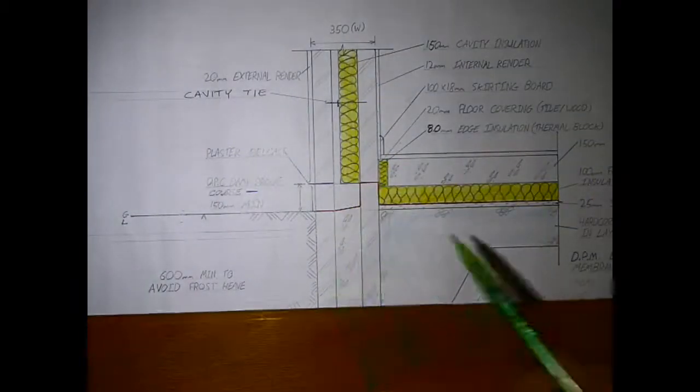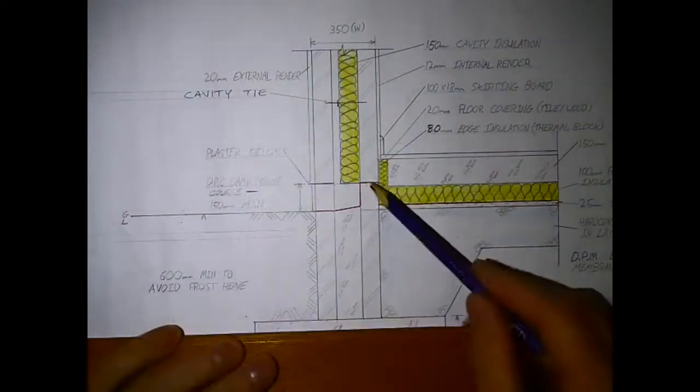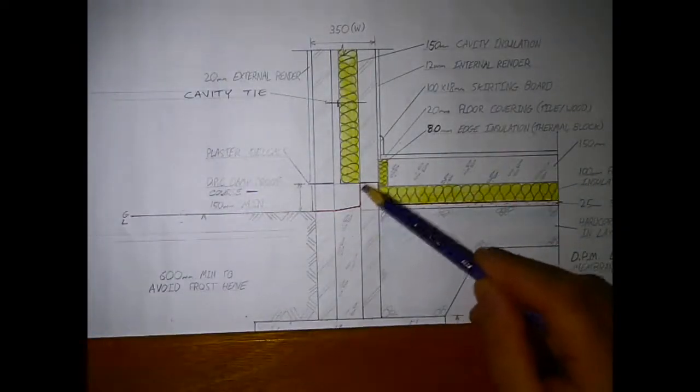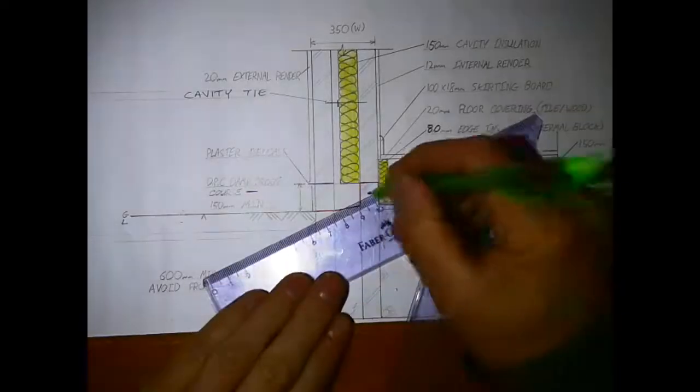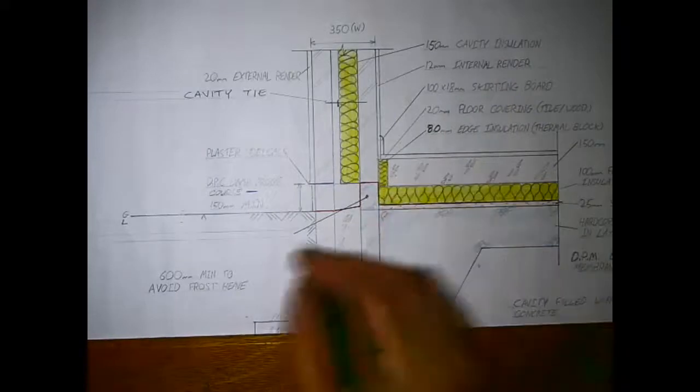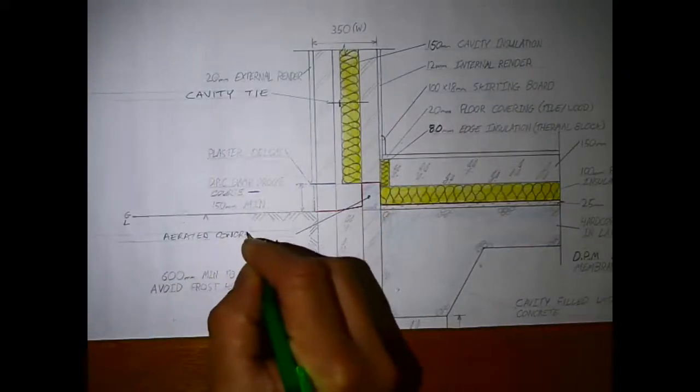Then this area in here where you see there would be the gap of the insulation, I'm going to shade in a block area here which could be an aerated block, which would increase the thermal value or thermal properties at this point, reducing the possibility of a thermal bridge.